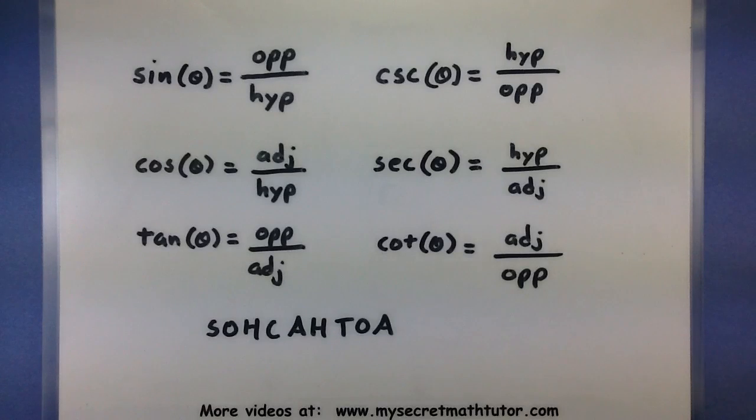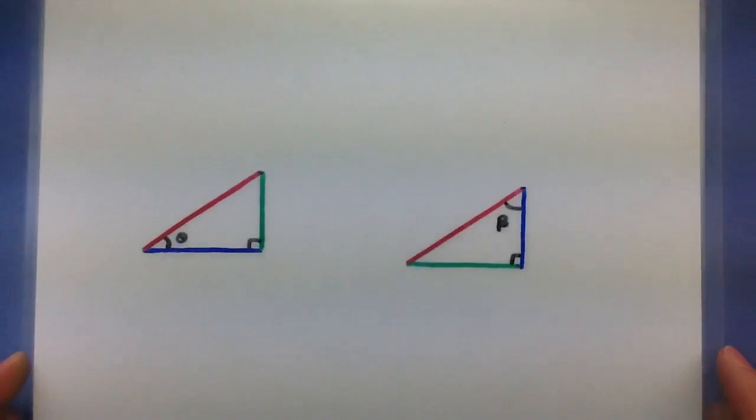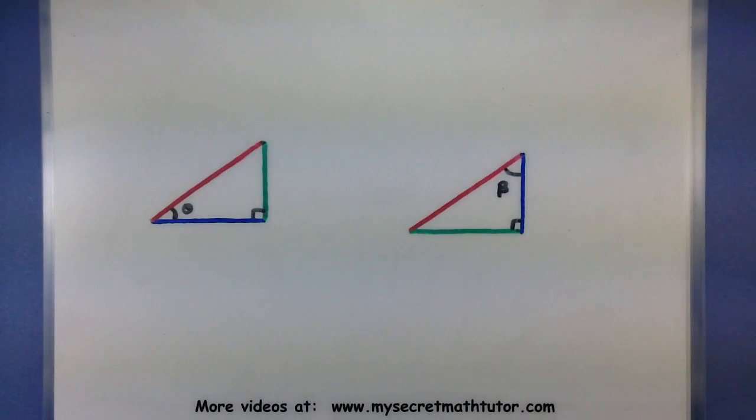Now, to understand how it relates sides of a right triangle, and why you need a given angle, let's look at some right triangles and see why this is. So here I have two right triangles. I've marked out an angle on this one, theta. I've marked out an angle on this one, beta.